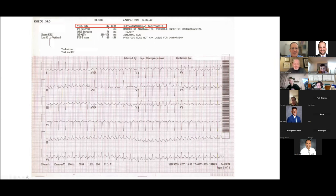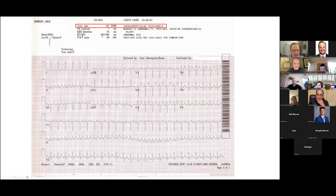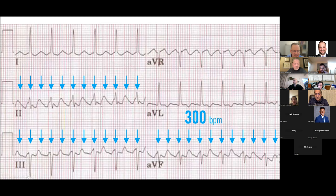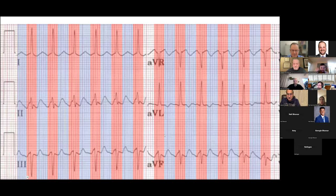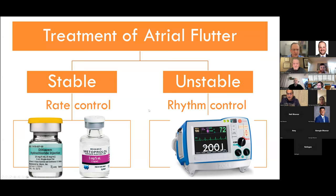Here's a 12-lead ECG that the machine reads as SVT, but notice 147 bpm. In lead II, this is very suspicious for flutter. At about 150 bpm, once you look at it with your flutter spectacles on, there's a QRS on every other hump — that's flutter with 2:1 conduction. Treatment of atrial flutter: if stable, rate control with calcium or beta blocker; if unstable, synchronized cardioversion.